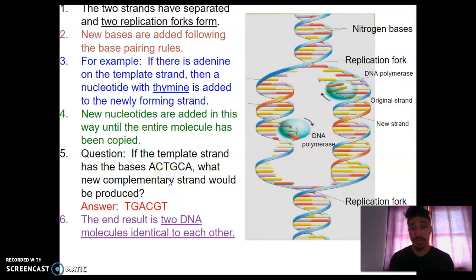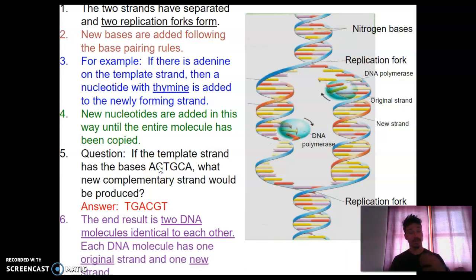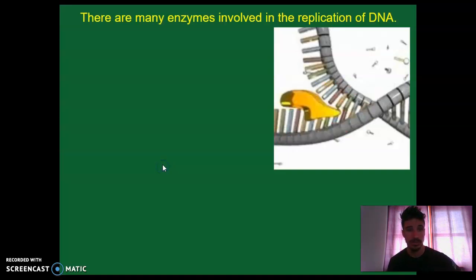So the end result is two DNA molecules that will be identical to each other, given that there were no major mistakes in the replication process. And again, each new molecule has one original strand and one new strand. And that means that DNA is replicated semi-conservatively because at least half the original strand is still there.